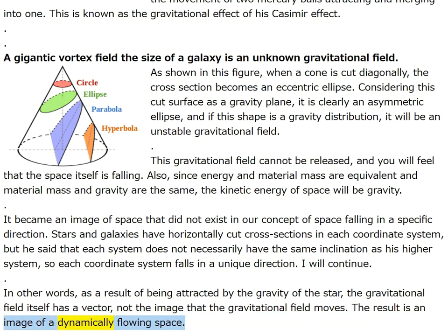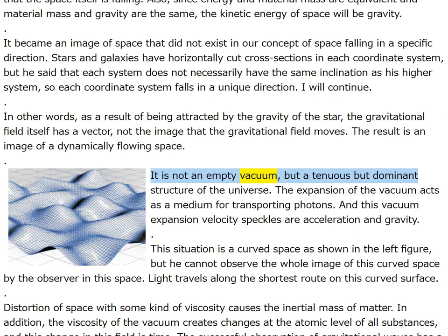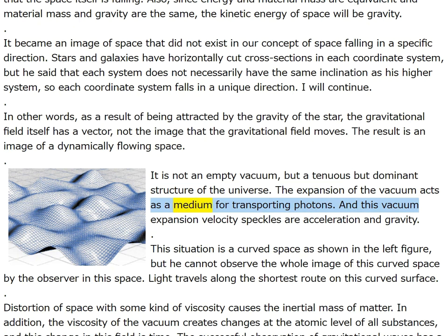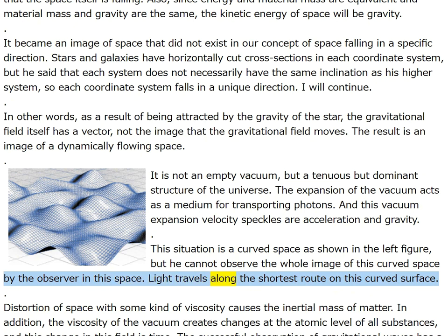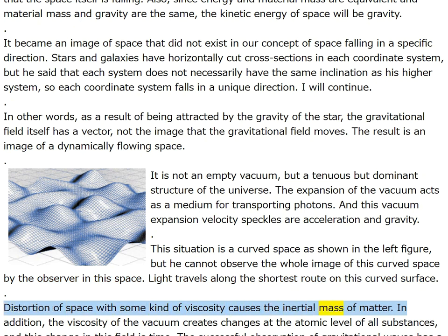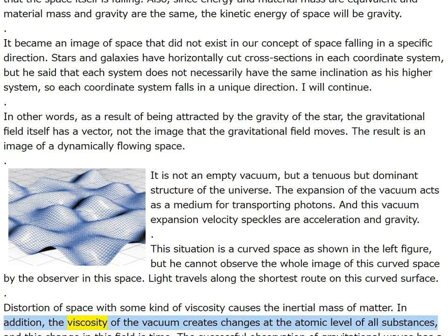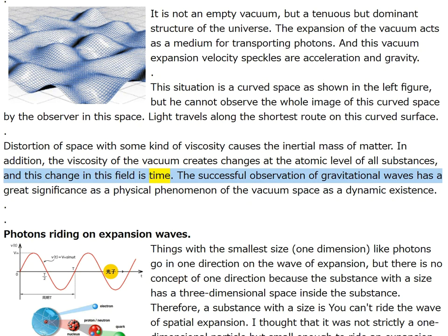The result is an image of a dynamically flowing space — not empty vacuum but a tenuous yet dominant structure of the universe. The expansion of the vacuum acts as a medium for transporting photons, and vacuum expansion velocity speckles are acceleration and gravity. Light travels along the shortest route on this curved surface. Distortion of space with some kind of viscosity causes the inertial mass of matter. The viscosity of the vacuum creates changes at the atomic level of all substances — this change in the field is time.